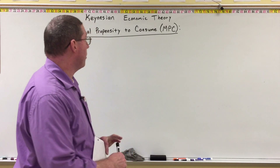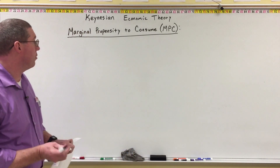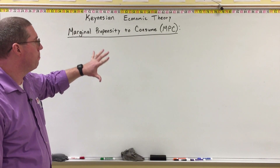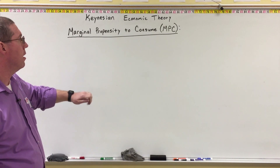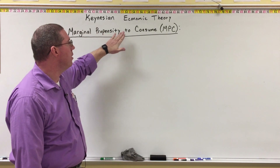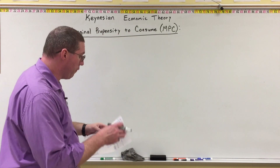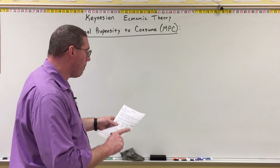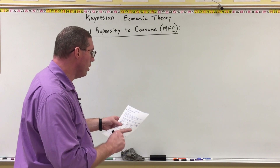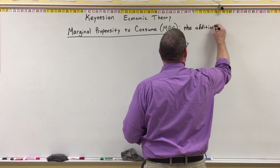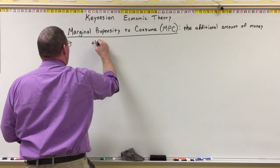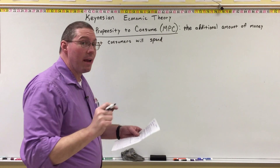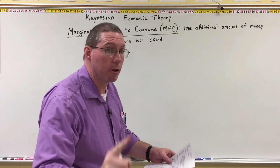In order to understand Keynesian economic theory, you first have to understand a very important concept and component from Keynesian economic theory, and it's called the marginal propensity to consume. I'm going to give you a definition for it first, then we'll talk about it. The marginal propensity to consume is the additional amount of money that consumers will spend when they receive one more dollar of income.